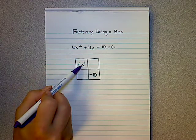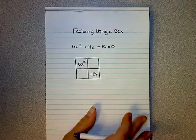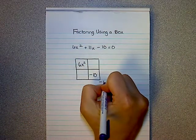Multiply diagonally now your 6x squared minus 10. Negative 60x squared.